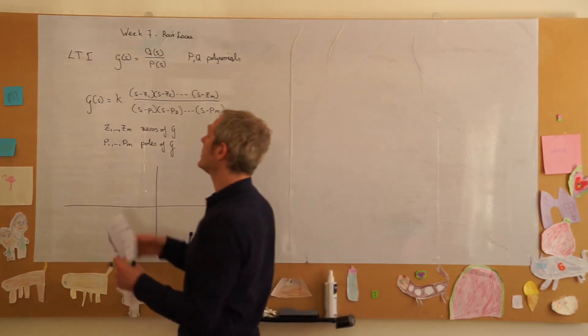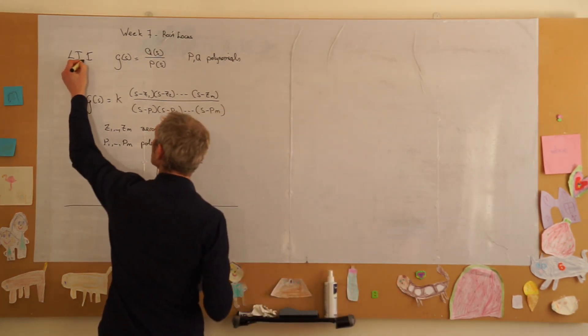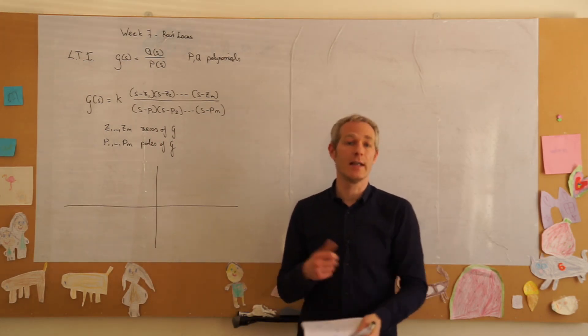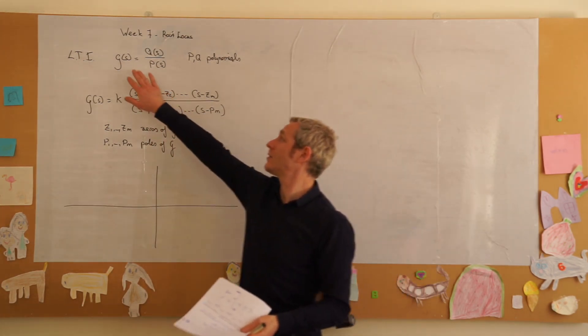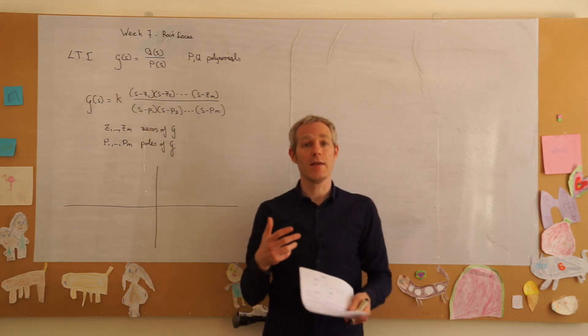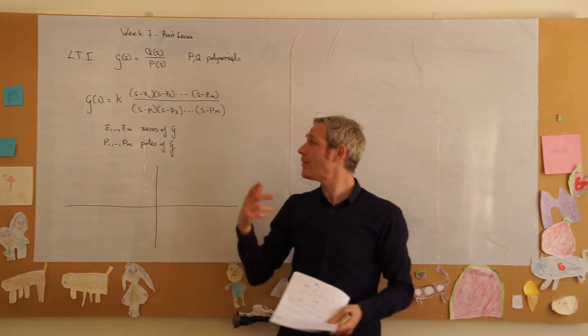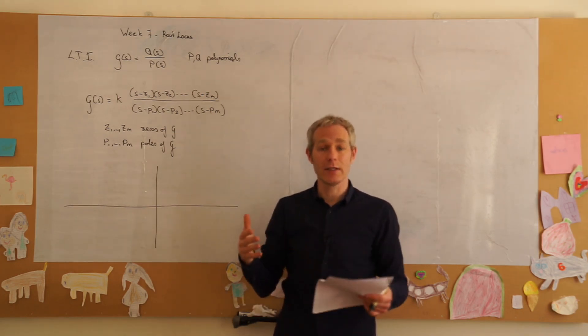If we look at certain systems, the linear time invariant systems, which are differential equations that are linear with constant coefficients, we know that we get a transfer function, which is a fraction of two polynomials. And if we have a polynomial, we can write it out in terms of its roots.